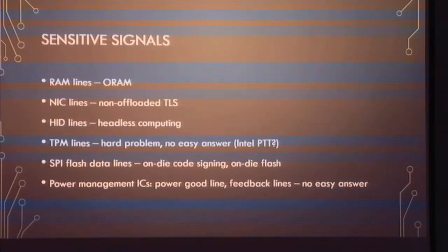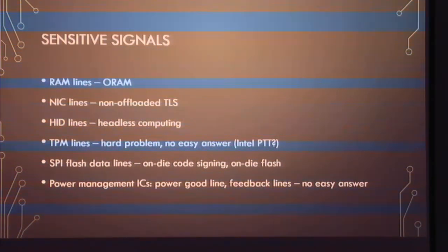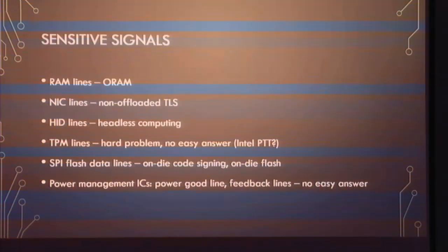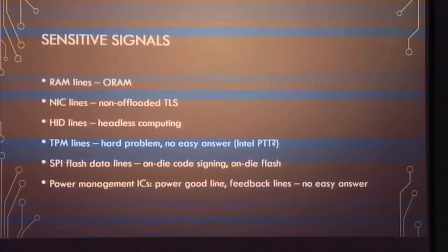For RAM lines, we can use an academically developed technique called Oblivious RAM. One implementation has the CPU encrypt everything going into RAM; when it reads from RAM it has a decryption key in a register, decrypts the values, uses them, and re-encrypts when writing back. Many implementations exist and some work better than others. If your worry is somebody intercepting RAM signals, you can use this technique. Many system-on-chip modules have this as a feature you just enable via a register.